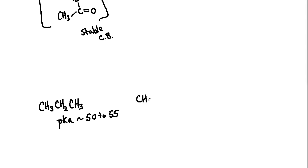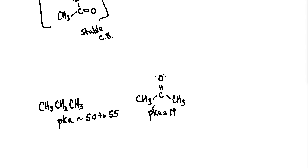If you turn that center carbon into a carbonyl, you get acetone, which is a type of ketone. The hydrogens are still on a carbon, but just the presence of a set of pi bonds next to the potentially acidic carbon drops the pKa all the way to 19. Going from 50 to approximately 20 is a 10 to the 30th jump in acidity — an enormous magnitude due to resonance.